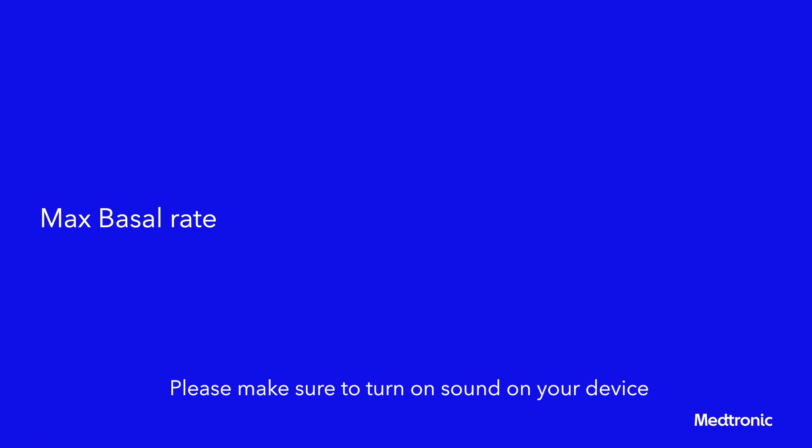Setting max basal and max bolus. Max basal rate: the max basal rate is the maximum amount of basal insulin that the pump can deliver per hour. Set the max basal rate as indicated by a healthcare professional. It is not possible to set a basal rate, a temp basal rate, or a preset temp basal rate that would exceed the max basal rate limit. The max basal rate can be set from 0 to 35 units per hour.